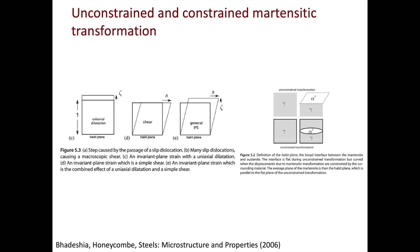When we first introduced the concept of martensitic transformation, we said it can lead to lattice dilation, shear, and a combination of dilation and shear. For martensitic transformations in steels and in shape memory alloys, as we'll see later, it is a combination of dilation and shear.